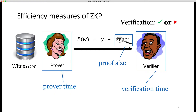There are three efficiency measures for a zero-knowledge proof protocol. Prover time is the time for the prover to generate the proof. Proof size is the length of the proof, and verification time is the time for the verifier to check the proof. In general, we just want faster prover time, faster verification time, and short proof size.